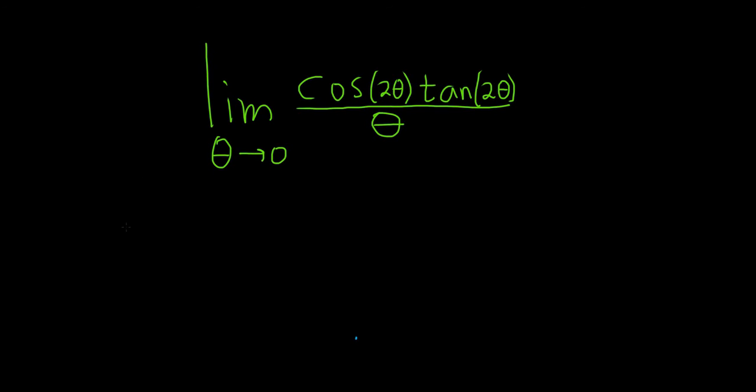So the next best strategy is to maybe rewrite tangent in terms of sine and cosine. This is equal to the limit as theta approaches 0 of the cosine of 2 theta. And then we can write tangent as sine over cosine. This is sine of 2 theta over cosine of 2 theta.